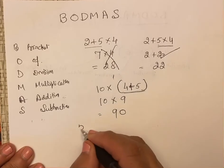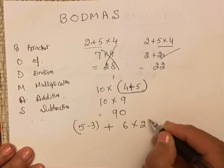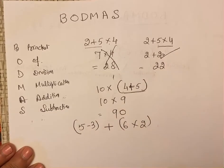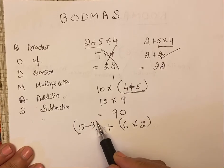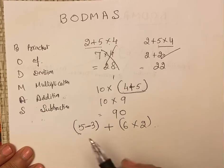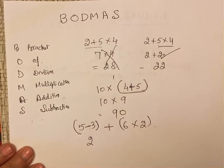If we take 5 minus 3 plus 6 into 2, how we will solve it? Here, two brackets are here. But we will solve first, one by one. Now we will take the first one: 5 minus 3. To solve bracket, I have told you, we will not consider the sign here. We will consider the bracket sign. So 5 minus 3, it comes to 2, the bracket is gone.